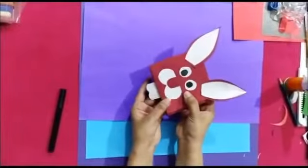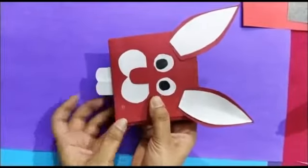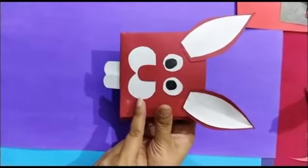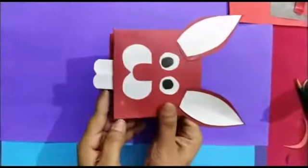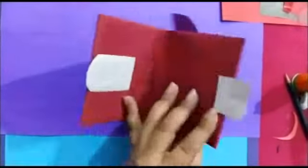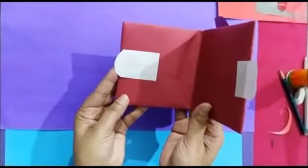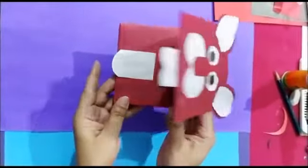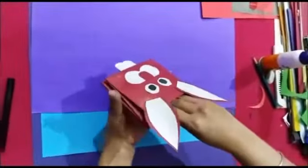Eyes are the same, nose like this, and teeth cut and paste like this, and tongue also. So our rabbit puppet is ready.